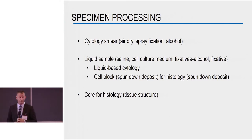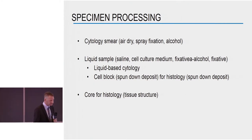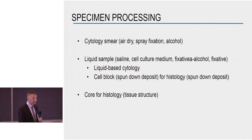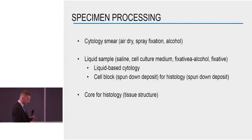How can we process our specimen from the FNA needle? You can do a cytology smear — either air dried or with some fixation. You can place the content of the needle in a liquid solution for liquid-based cytology. Or you can make a cell block: you spin down the content of the vial, fix it in paraffin, and it can be evaluated for histology. Alternatively, you can generate a large core that goes directly to formalin. We'll talk about that when we come to FNB needles.